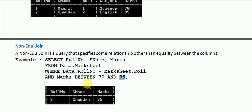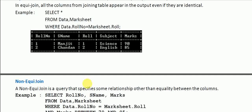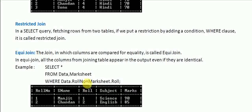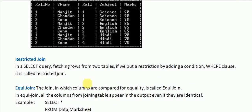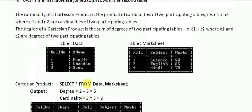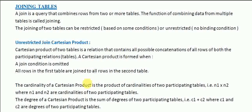In this tutorial you have learned about three new join types: non-equi join, equi join, and restricted join. The previous one was the unrestricted join or the Cartesian product. That was all for this tutorial, thank you.